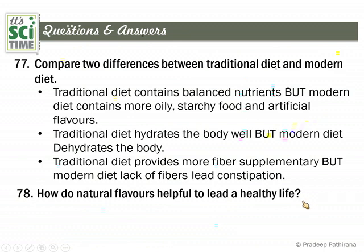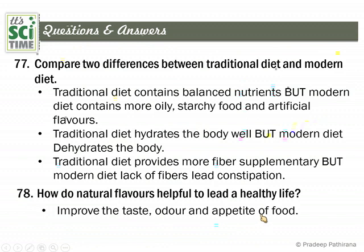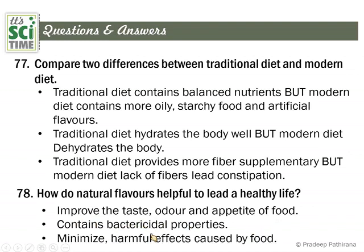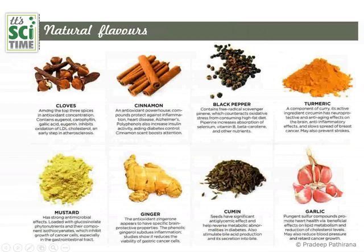Question 78: How do natural flavors help lead a healthy life? Natural flavor types include cinnamon, clove, saffron, and such ones. Number one: they improve the taste, odor, and appetite for food, and increase interest in food. Number two: they contain bactericidal properties — they destroy bacteria and improve immunity in the body. Number three: they minimize harmful effects caused by food; if food contains some toxic substance, natural flavors can help destroy those toxic substances.